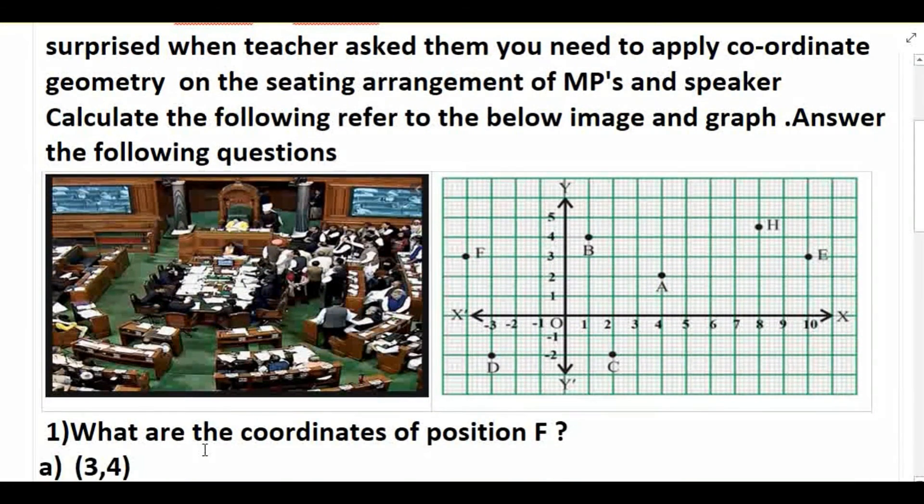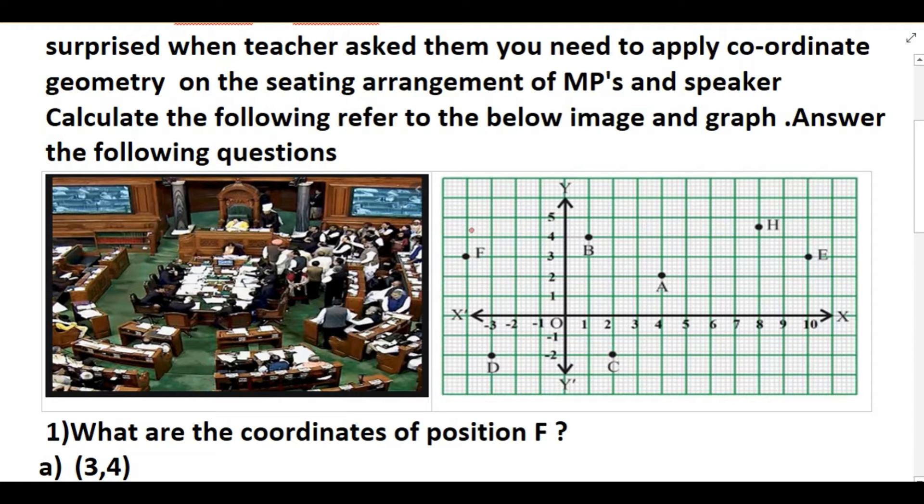So these are the seating arrangements of various MPs and speaker in Sansad Bhavan. You can see according to that the graph is plotted. Now looking at the graph, you have to find out the answers. What are the coordinates of position F? So F is here, we need to find the coordinates of this position F.